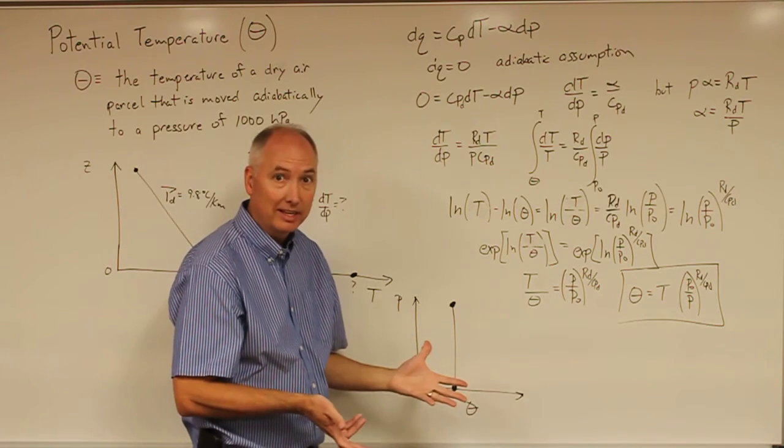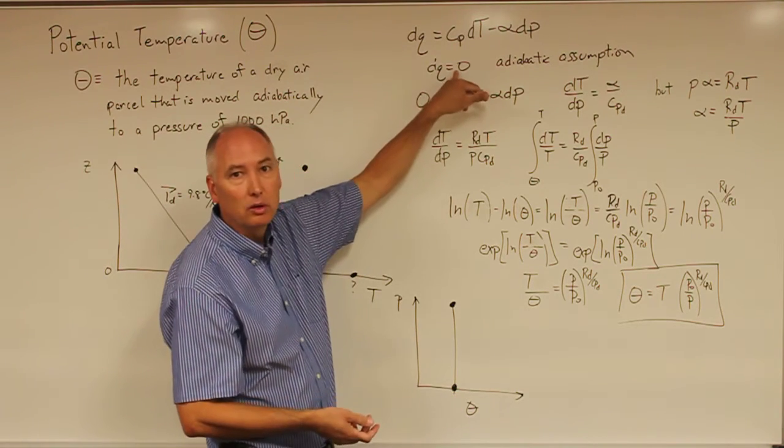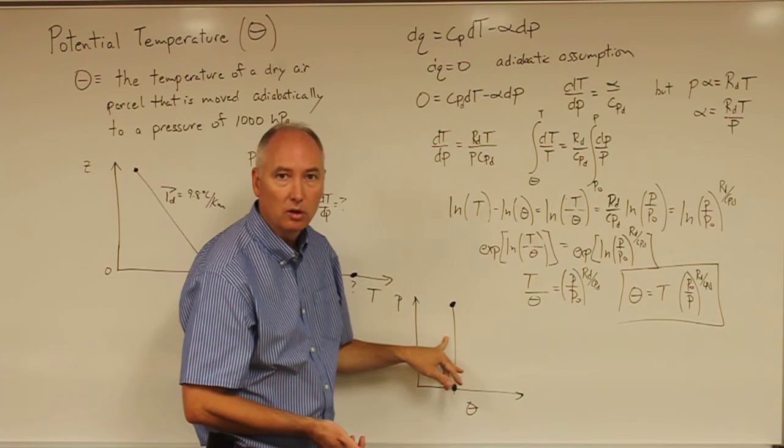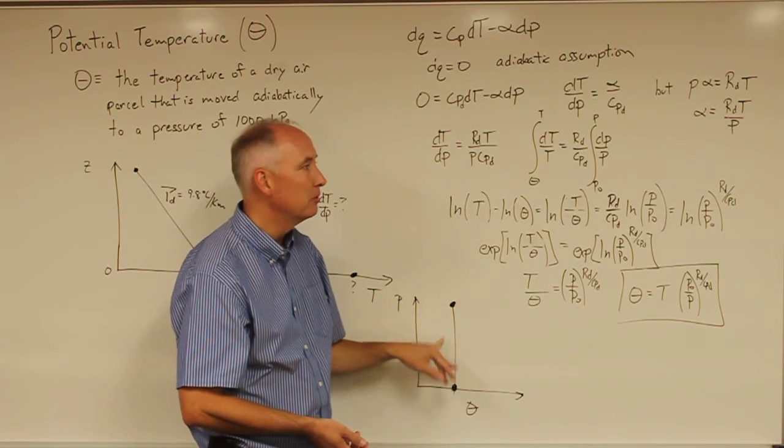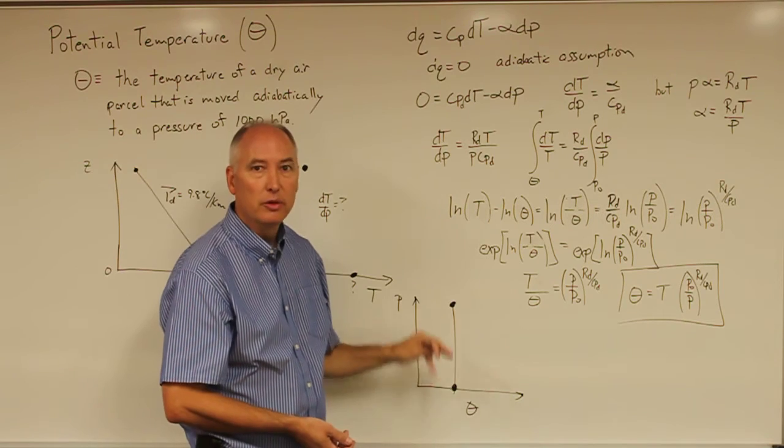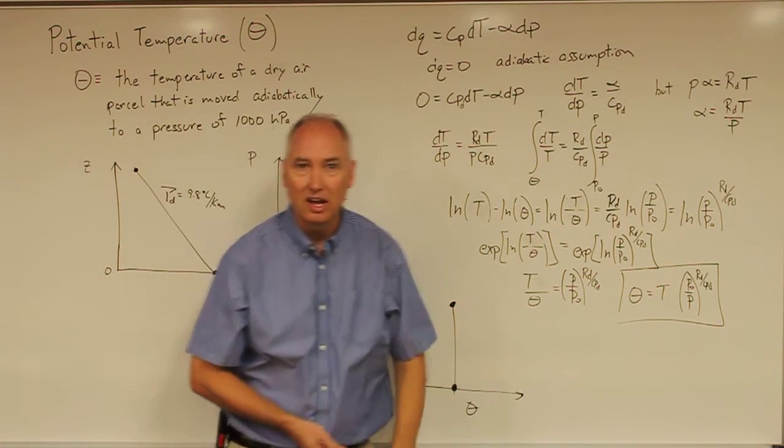that's a release of latent heat and DQ would no longer be zero and potential temperature would no longer be conserved. And we will do many applications using potential temperature in this class.